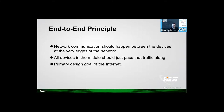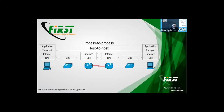Otherwise, our connection is not private, and we can't rely on the data to be secure and authentic. This is a diagram of how end-to-end should look. According to the principle, the network is only responsible for providing the terminals with connections. Any kind of intelligence should be located at the terminals. An example of such intelligence is modifying a packet header, like destination or source.